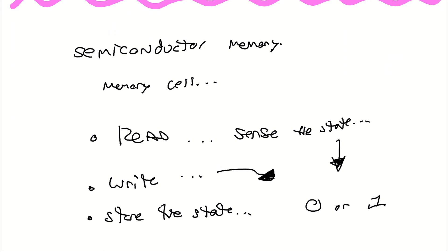There's flexibility with writing because some memory cells can only be written once. For example, if you have a small embedded device that only does one program, there's no reason to spend more money on memory you can write to multiple times — you just write once and make it a ROM, read-only memory. With reading, you want to be able to read multiple times. The third property is to store whatever you're writing so you can read it later.